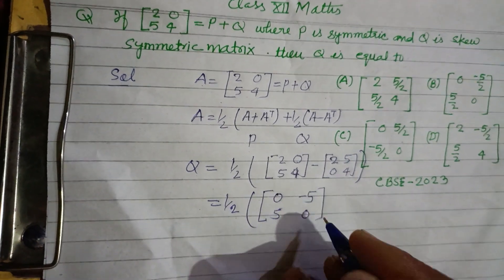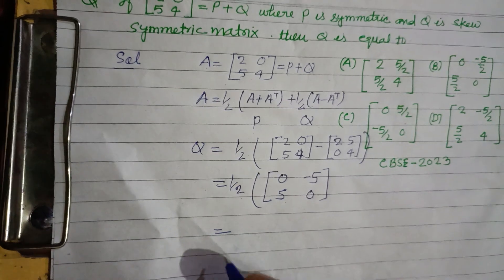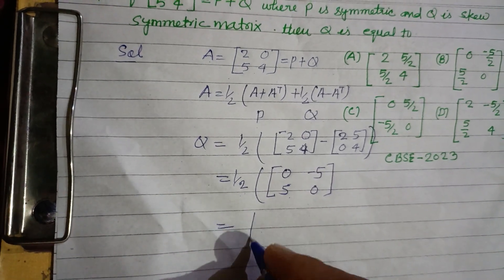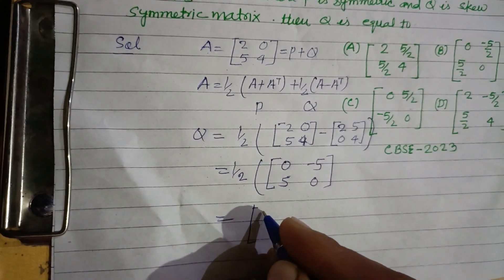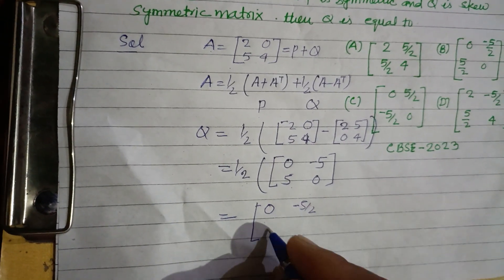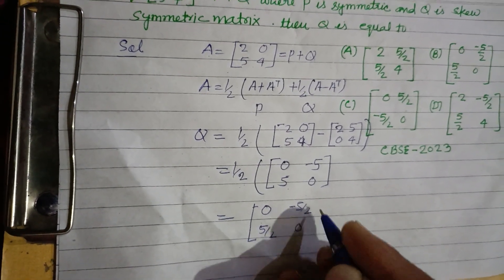We got the matrix, now we divide each term by 2. So this gives us 0, -5/2, 5/2, and 0.